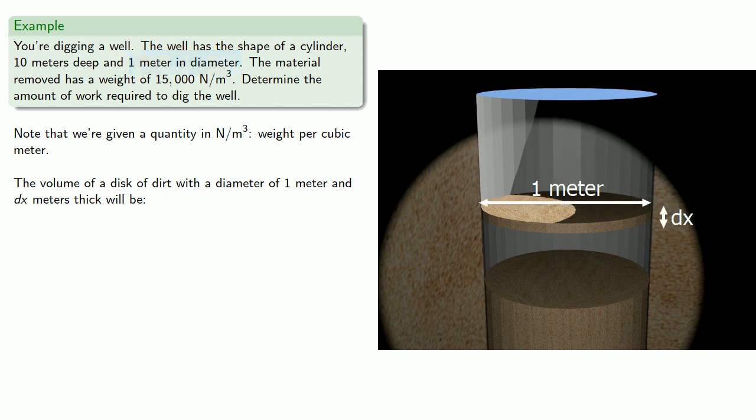Well that's the volume of a very short cylinder, pi r squared h. Since the diameter of the cylinder is 1 meter, that means the radius is 1 half meter. And since we're taking a slice, the thickness is going to be a little bit of x, dx.